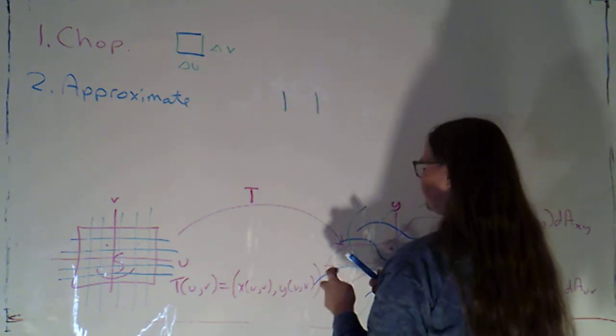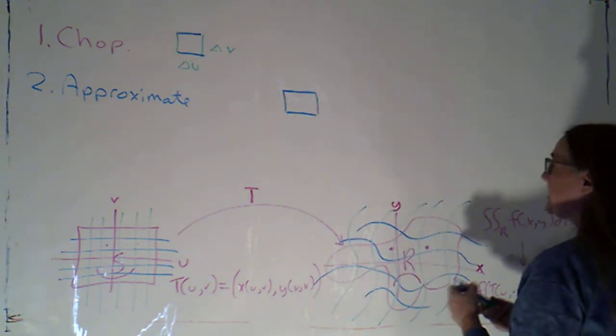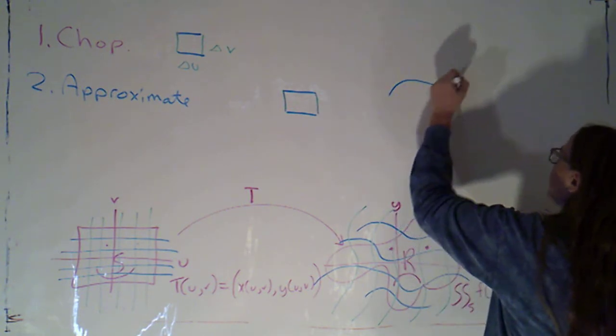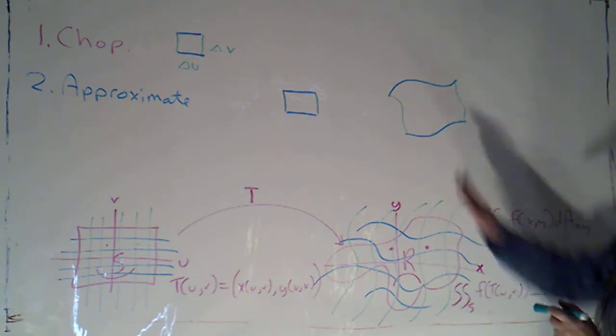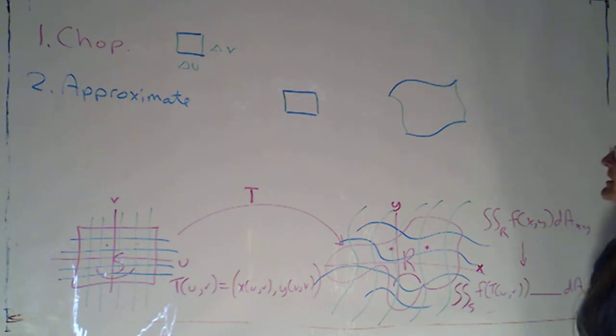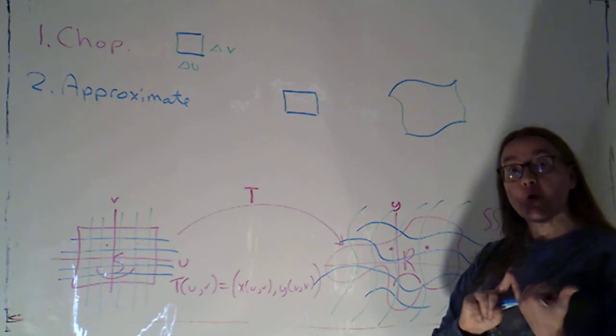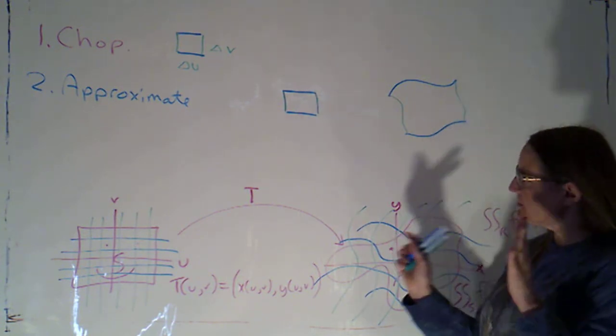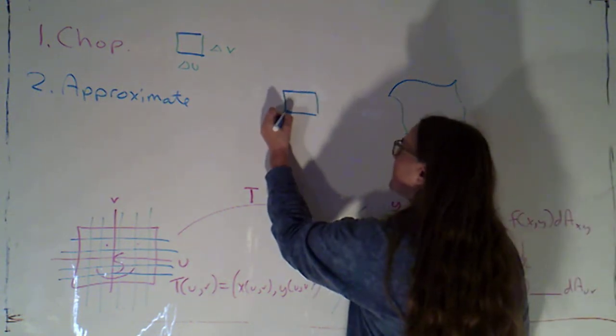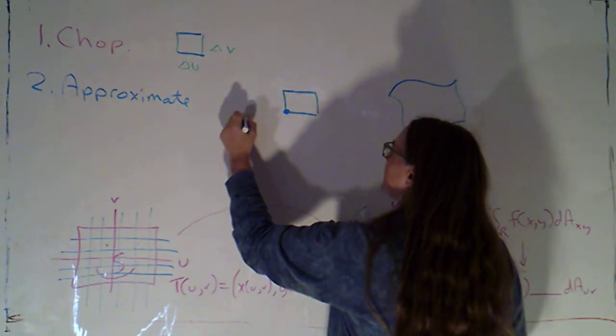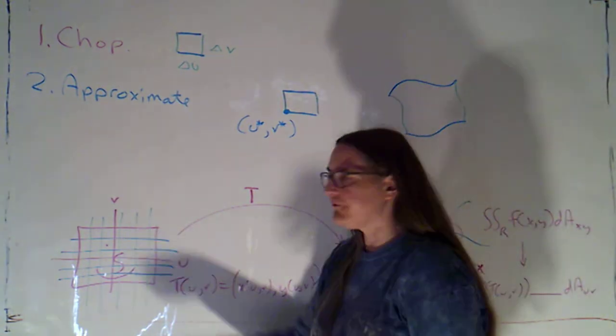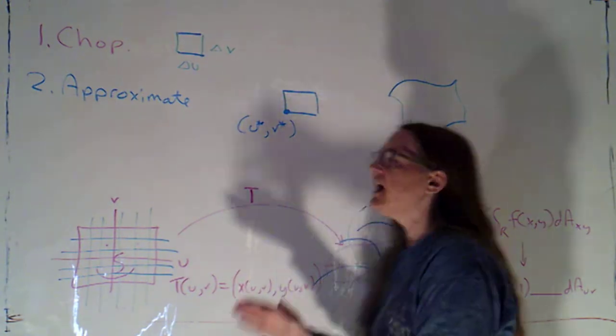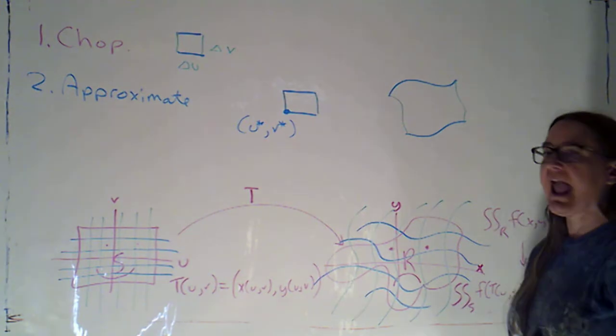So I've got one of these guys that's being associated now with one of these guys. And my function f is attaching a z value or a height to every point on here. I'm trying to approximate the signed volume that lies above this. And I'm going to do that by basically approximating both the height and the area of the base. We're used to just having to approximate the height. So here's what I'm going to do. I'm going to pick a representative point right here. So I'm just going to call that u star v star. Now I'd be doing that for each one of these rectangles.